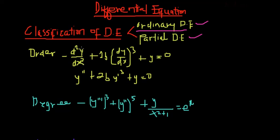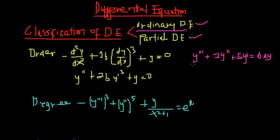d²y/dx² can also be written as y double prime. For example, if we have y triple prime plus 2y double prime plus 5y prime equals 6xy, the order of this differential equation is 3, because that is the highest number of times y is being differentiated.